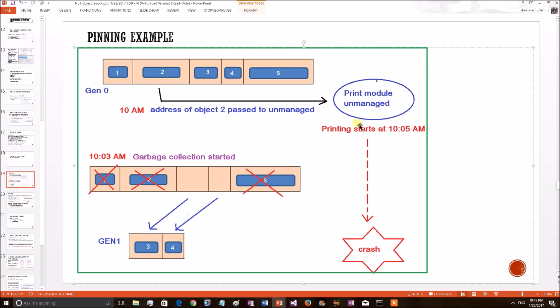But consider the fact that the print module will print the object only 5 seconds later at 10:00:05 AM. So meanwhile, think about a garbage collector happening on the Gen0 heap section at 10:00:03 AM and collecting object 2.